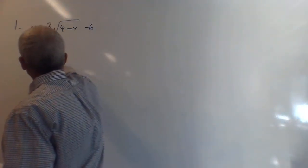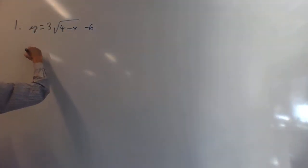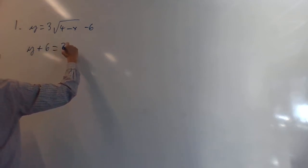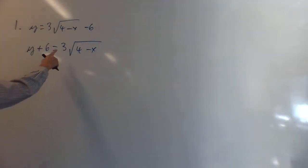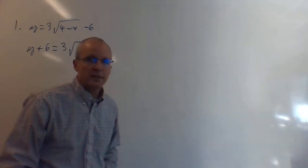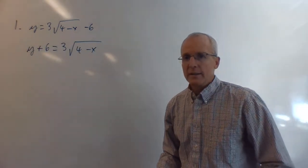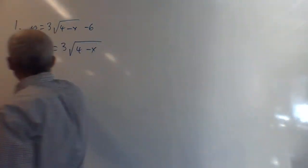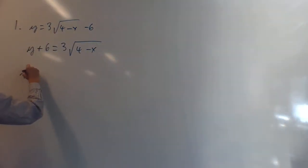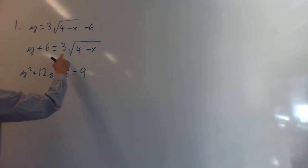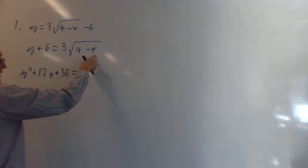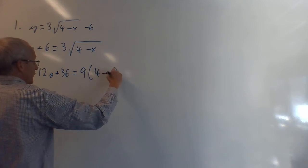We want to get the square root by itself. Move the minus six over to get y + 6 = 3√(4 - x). Now square both sides — don't forget to square the three, a lot of people forget that on quizzes. Squaring the left side gives y² + 12y + 36, and squaring the right gives 9(4 - x), which is 36 - 9x.